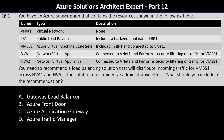You also have two network virtual appliances, NVA1 and NVA2. NVA1 is connected to VNet1 and performs security filtering of traffic for VMSS1. You need to recommend a load balancing solution that will distribute incoming traffic for VMSS1 across NVA1 and NVA2. The solution must minimize administrative effort. Your options are Gateway Load Balancer, Azure Front Door, Azure Application Gateway, or Azure Traffic Manager.